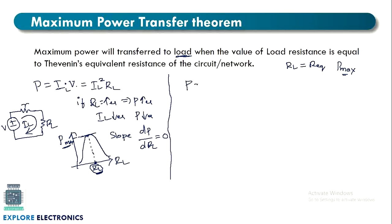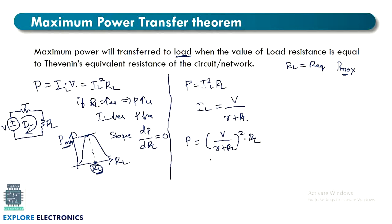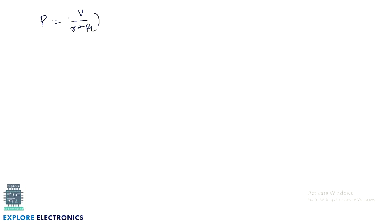Let us differentiate the expression for power. Power can be written as P = IL²·RL. The current I through the circuit equals the total voltage V divided by the total resistance R plus RL. So I = V/(R + RL), and power can be written as P = [V/(R + RL)]² · RL. This is the expression we need to differentiate with respect to RL.